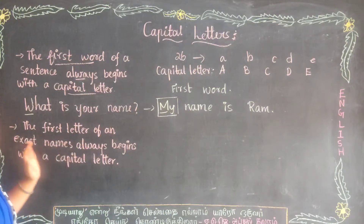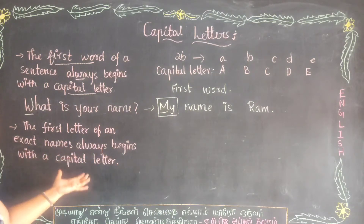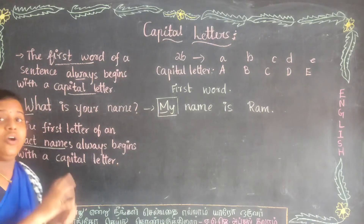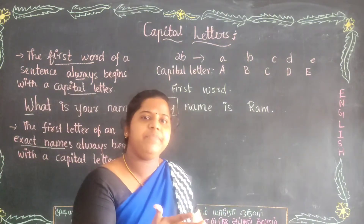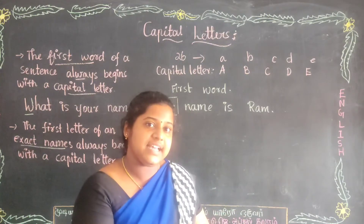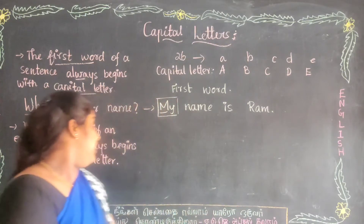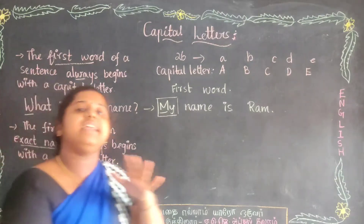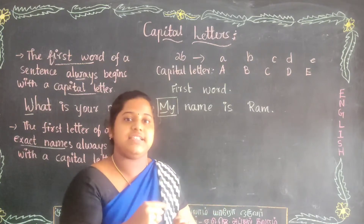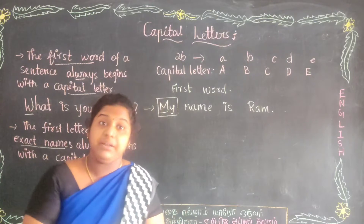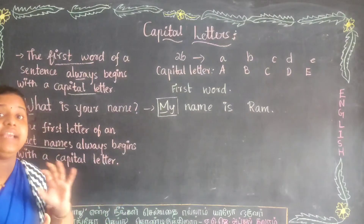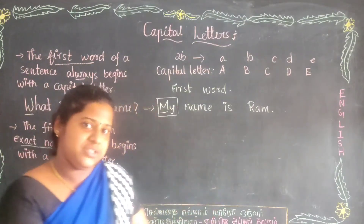Second point: the first letter of an exact name always begins with a capital letter. Have you heard about what is an exact name? Yes, you studied it before in naming words. Exact names are names which use a particular name of a person, place, animal, or thing. Exact names are also known as proper names.